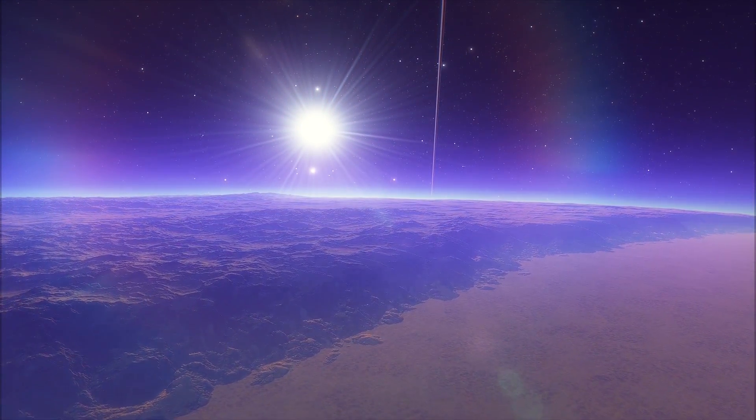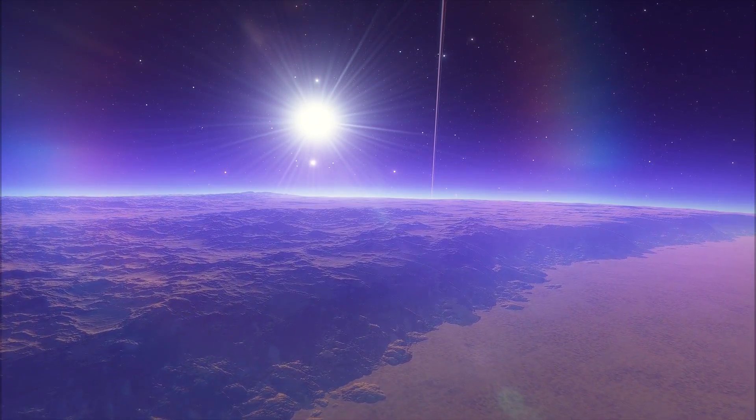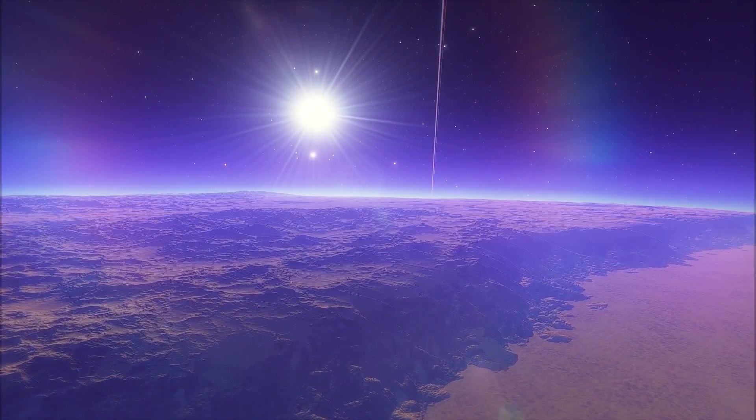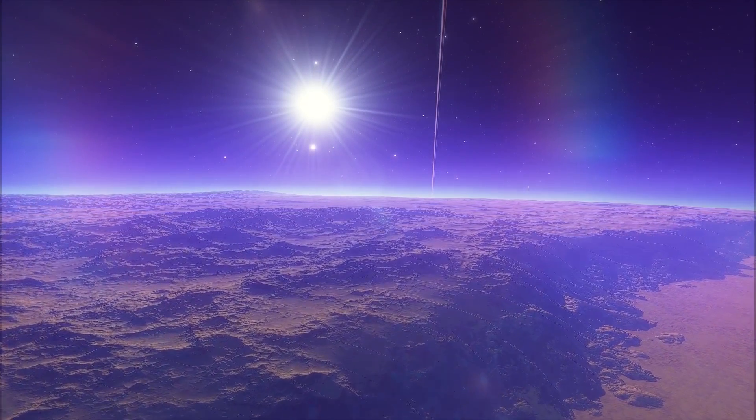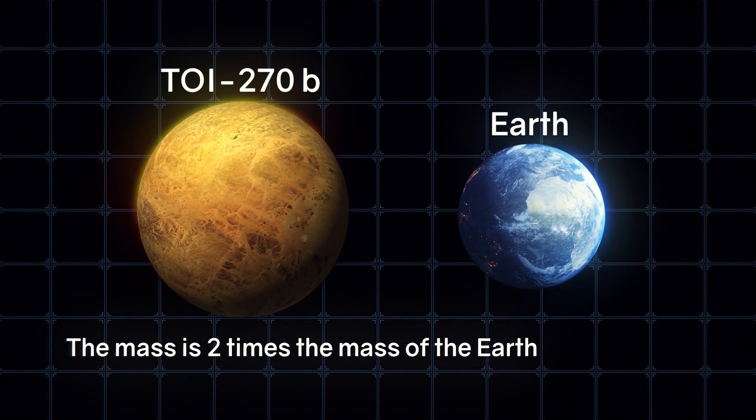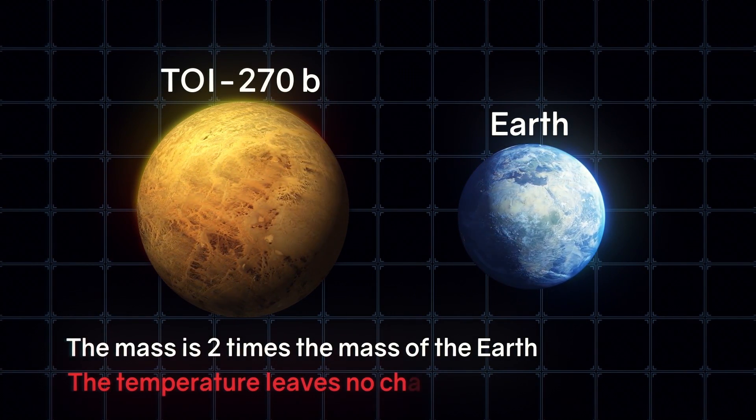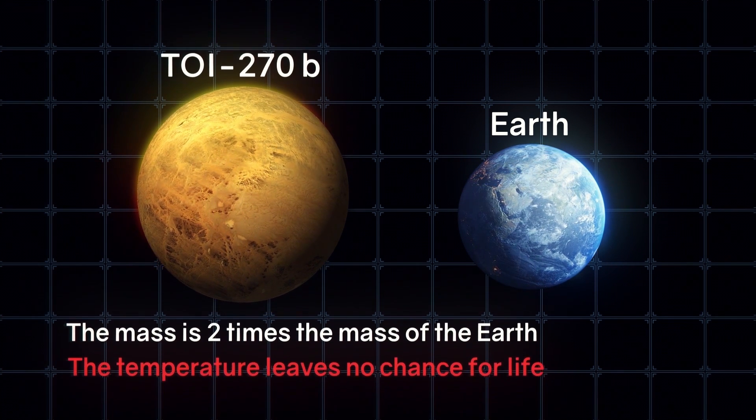As you can see, it's not the best combination for the emergence of life. The planet closest to the star is TOI-270 b. It's a super-Earth. Its mass is only 2 times that of the Earth. But the temperature on the surface leaves no chance for life.